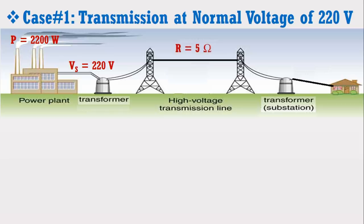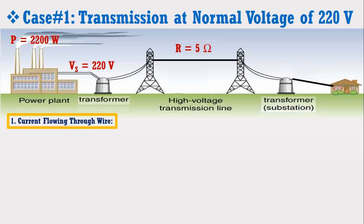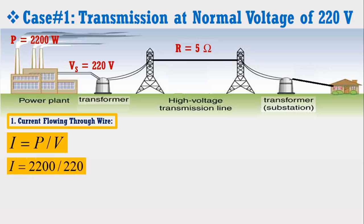Now we are going to calculate the current flowing in the transmission line, voltage drop, power loss, and efficiency of the transmission line. To make the calculation simple, we assume that power factor is unity. We know that current flowing through the transmission line is given by I = P / V. Putting the values of P and V in the above expression, we get the current flowing in the transmission line. It can be noticed that at 220 volt, a current of 10 ampere is flowing in the line.